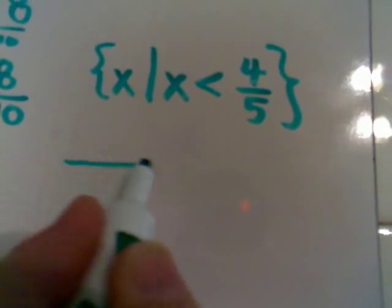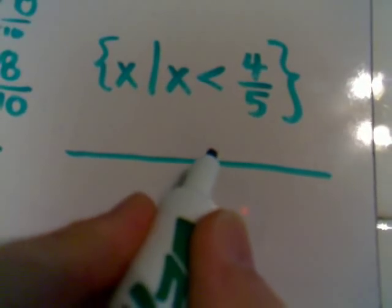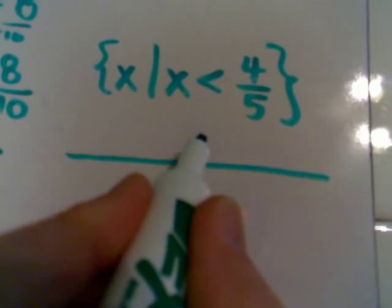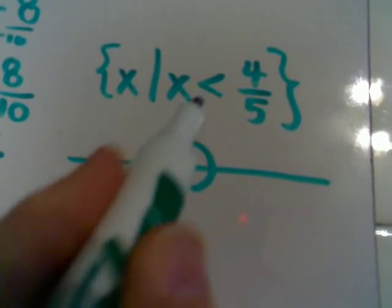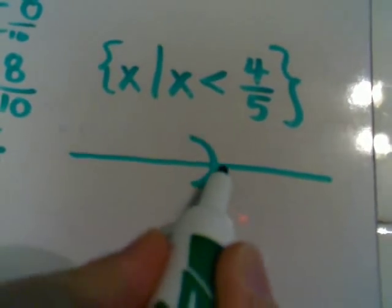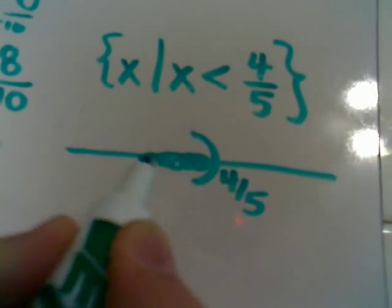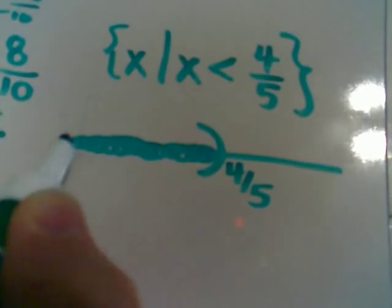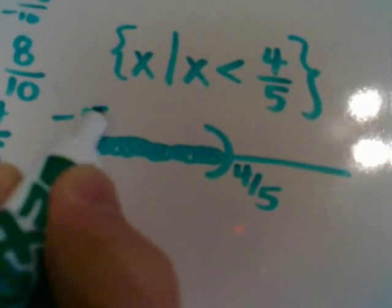Another way to express it is graphically. I would find 4 fifths on my number line, I would put a paren on it because it's not equal so it's not included. This is the number 4 fifths, and since x is less than it I would shade to the left.